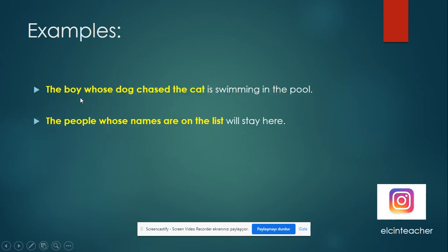'The boy whose dog chased the cat is swimming in the pool.' So this part — 'the boy whose dog chased the cat' — is the subject of the sentence, and 'is' is the verb. Similarly: 'The people whose names are on the list will stay here.' This part is the subject of the sentence again.